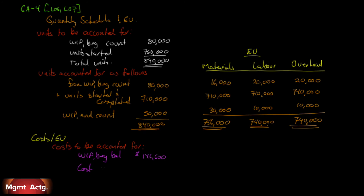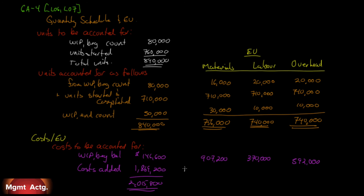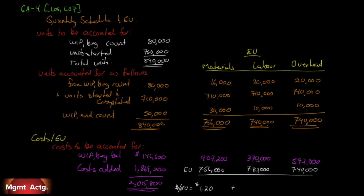Costs added this period: $592,000 for overhead, $370,000 for labor, and $907,200 for materials, totaling $1,869,200. The total costs to be accounted for were $2,015,800. Dividing costs added by equivalent units: $907,200 ÷ 756,000 = $1.20 for materials; $370,000 ÷ 740,000 = $0.50 for labor; $592,000 ÷ 740,000 = $0.80 for overhead.